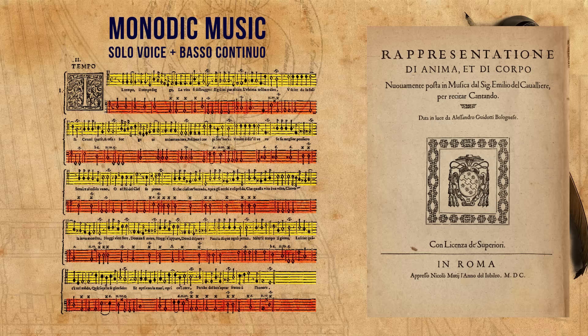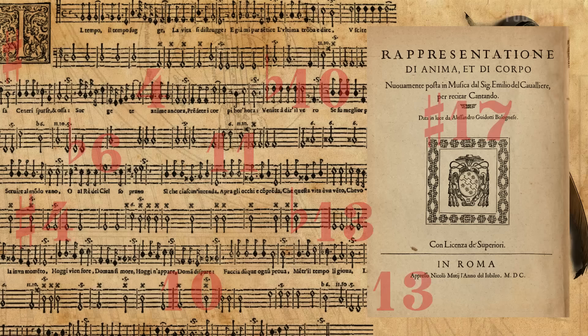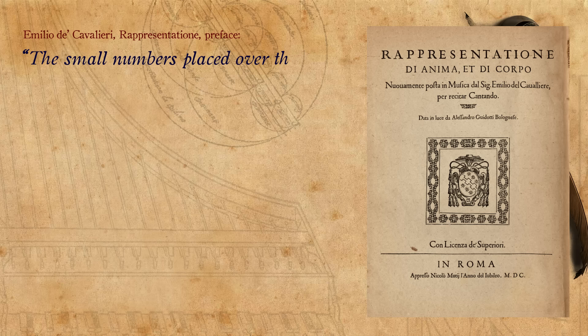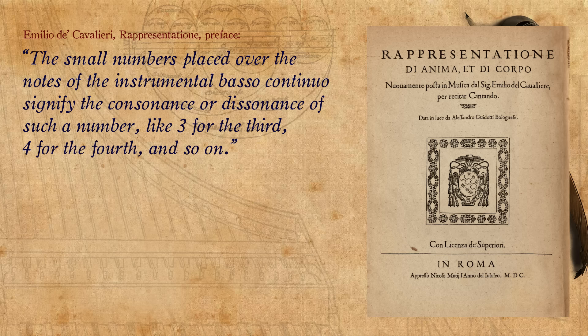As most of you probably know, the basso continuo player is guided by the placement of numbers and signs above the part. Here is how Cavalieri formulated it in the preface to his Rappresentazione: the small numbers placed over the notes of the instrumental basso continuo signify the consonance or dissonance of such a number, like three for the third, four for the fourth, and so on — as seen in the music, he means numbers up to 18.